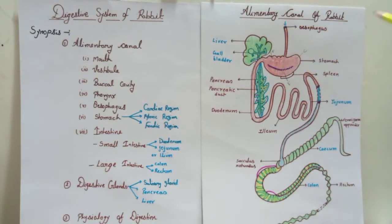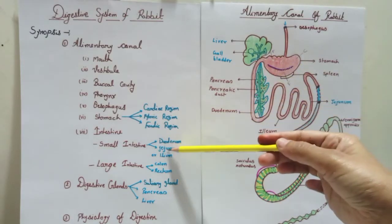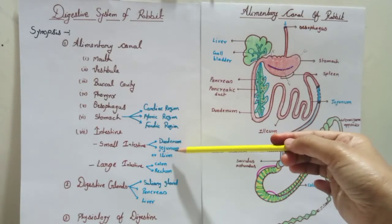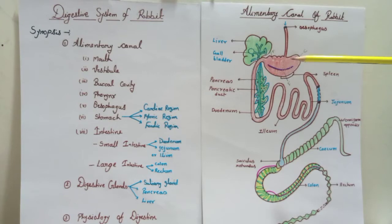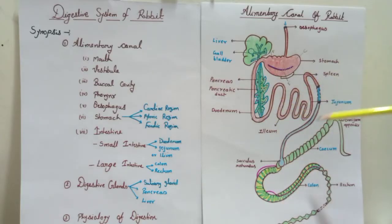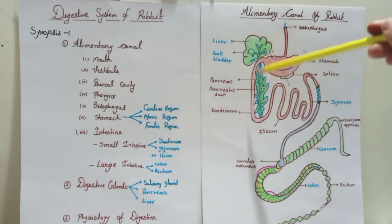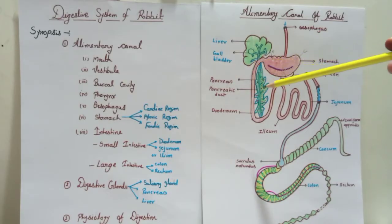The stomach opens to the intestine. There are two parts: small intestine and large intestine. In the small intestine there are two parts — duodenum, and second, jejunum and ileum. In the large intestine there are two parts — colon and rectum. The small intestine is a quiet tube-like structure. The first part, duodenum, is a U-type structure, and in the duodenum there is a digestive gland called the pancreas.